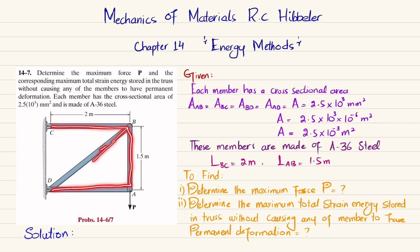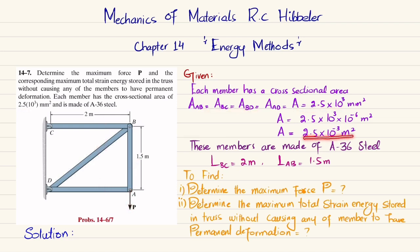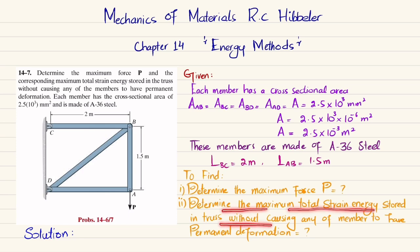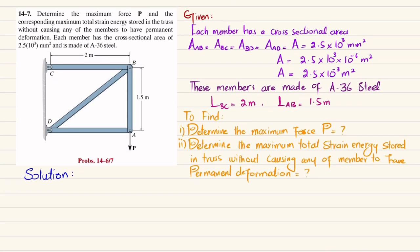You can see this is the truss acted upon by a load P. Each member has a cross-sectional area of 2.5 × 10⁻³ square millimeters. There is a load P applied, and you have to find the maximum P without causing any member to permanently deform, and determine the maximum total strain energy stored in the truss without causing permanent deformation. Let's start with the solution.